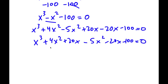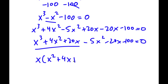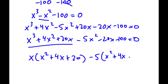From here, what is the greatest common factor of x to the power of 3 plus 4x squared plus 20x? That would be x. So I have x times x squared plus 4x plus 20. And then I have minus 5 times x squared plus 4x plus 20. And this is equal to 0.